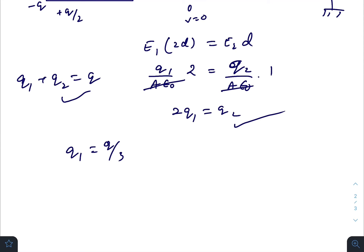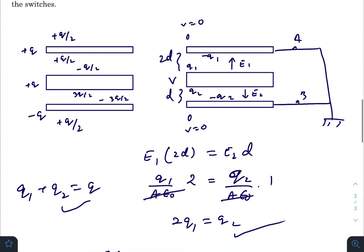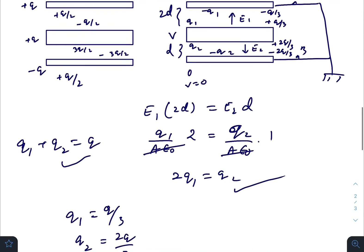If we solve these two equations we will get that q1 is equal to q by 3 and q2 will be 2q by 3. So here the charge will be minus q by 3, plus q by 3, plus 2q by 3, minus 2q by 3. So this will be our final charge distribution.